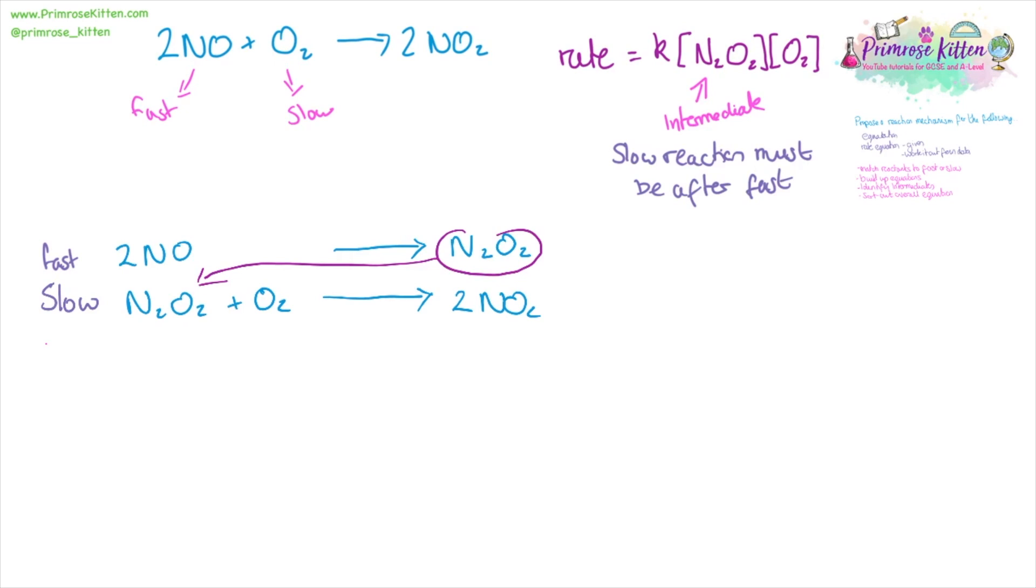Once you get your head around the fact that you've been given the intermediate, this is actually an easier example than the other ones. Again, writing everything out so we can see what we've got, and then crossing off our intermediates.